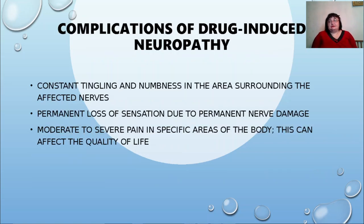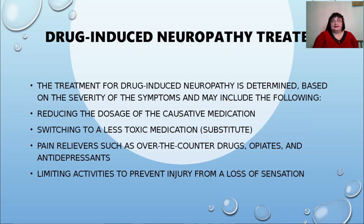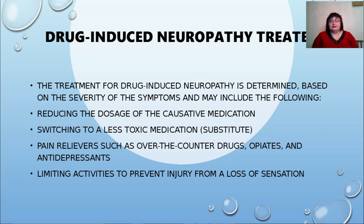Complications of drug-induced neuropathy can include constant tingling and numbness in areas surrounding affected nerves, permanent loss of sensation due to permanent nerve damage, and moderate to severe pain in specific areas of the body, which can seriously affect quality of life. Treatment is determined based on severity and may include reducing the dosage of the causative medication, switching to a less toxic substitute, pain relievers such as over-the-counter drugs, opiates, and antidepressants, and limiting activities to prevent injury.